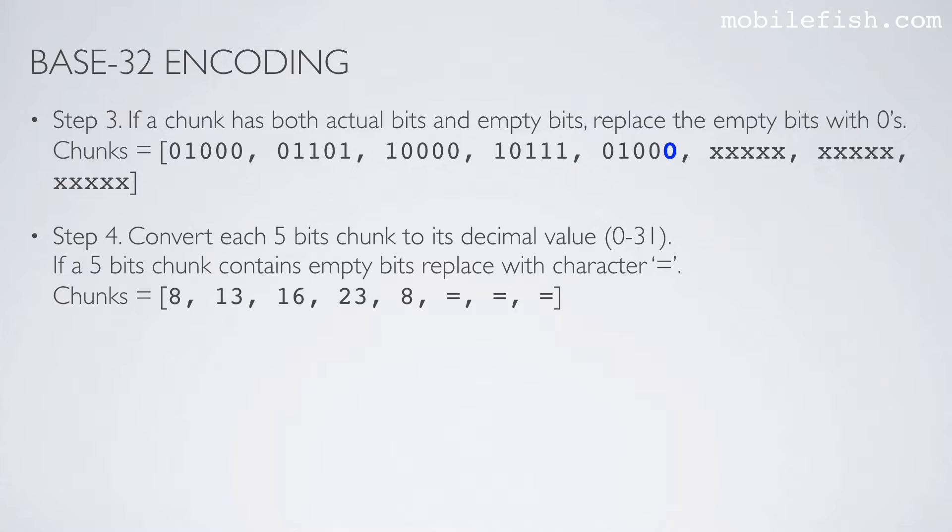Step 4: Convert each 5-bit chunk into its decimal value, and the values can be between 0 and 31 inclusive. This chunk represents decimal value 8, this chunk represents 13, this chunk represents 16, this chunk represents 23, and this chunk represents 8.